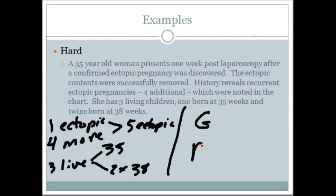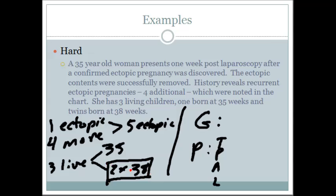Let's figure out her G's and P's. The gravida stands for the number of pregnancies. She's had one ectopic plus four more — that's five total ectopic pregnancies. Plus a singleton and twins. How are we going to deal with twins? She was only pregnant once with the twins, so that only counts as one pregnancy. So she has five ectopics plus two pregnancies to deliver her children, for a total of G7.